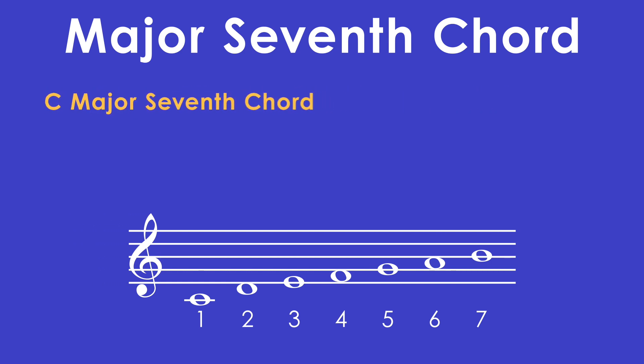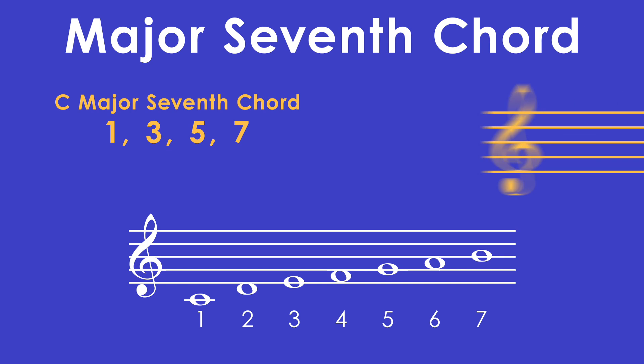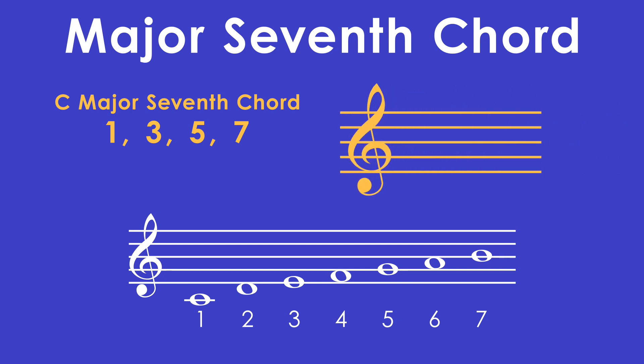The major seventh chord uses the 1, 3, 5, and 7 of the scale. One is C natural. Three is E natural. Five is G natural. And seven is B natural. This is our C major seven chord.